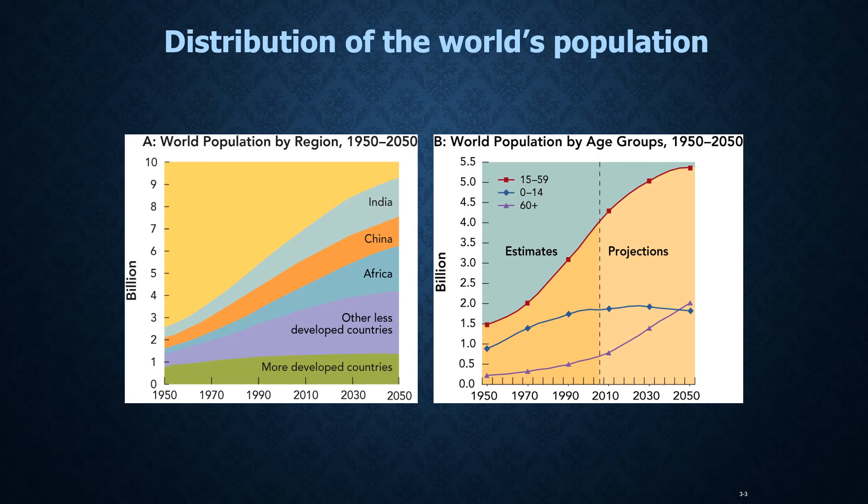Let's take a look at this chart. This chart shows the world population growth and percentages from 1950 to 2050 and the world population by age groups. One of the things you will note on the chart on the left is that by the year 2050, the majority of the population in the world will reside in India, China, and the continent of Africa. Currently, these would be considered developing countries.